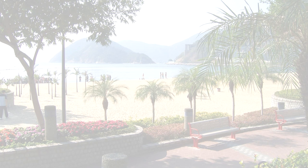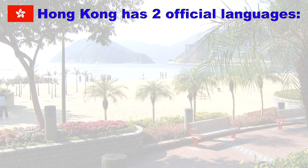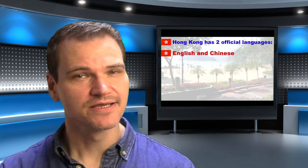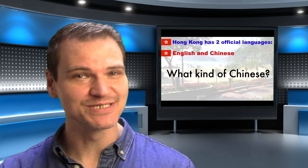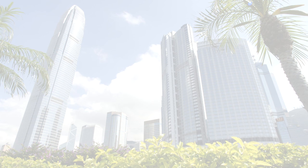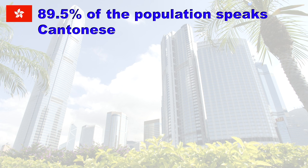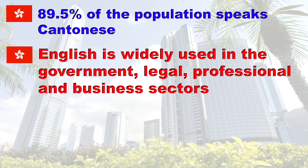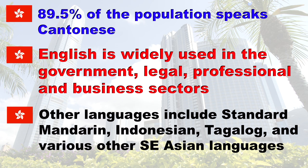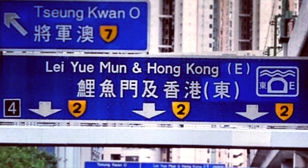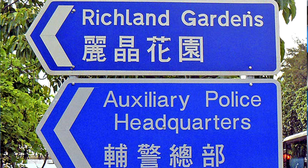In total, that's about 451,000 people from ethnic minorities. The majority of those are from either the Philippines or Indonesia, with around 133,000 people each. Hong Kong has two official languages, English and Chinese. The law is not exactly clear about which kind of Chinese is the official language, because the word Chinese refers only to the written language. Around 89.5% of the population speak Cantonese, making it the most widely spoken language. English is widely used within the government, legal, professional, and business sectors. Other languages spoken in Hong Kong include Standard Mandarin, Indonesian, Tagalog, and various other Southeast Asian languages. Road signs in Hong Kong tend to be bilingual in Chinese and English, but the place name is sometimes different in English and Chinese, which can cause confusion when tourists ask for directions.